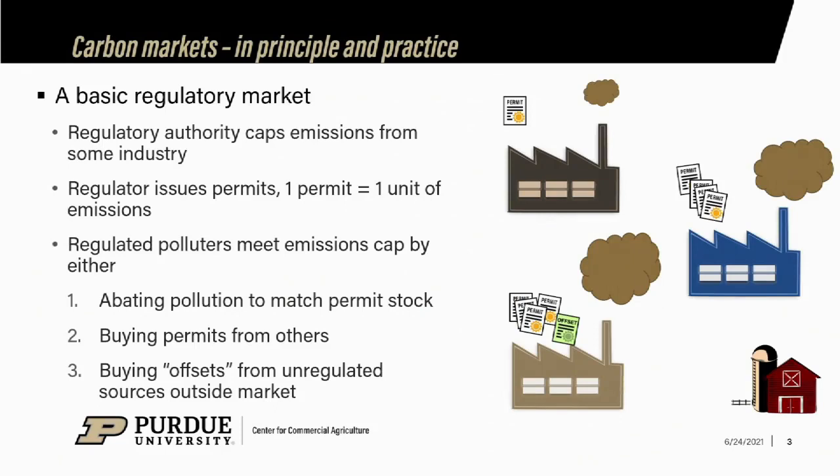Although agriculture could theoretically participate in one of these regulated markets, that's not going on right now with respect to agriculture because of a lack of verification and standardization on the ag side. In the current regulatory markets that have existed up to this point, not a single one has involved row crop agriculture as a source of offsets. We'll talk more about the verification and standardization issue later.